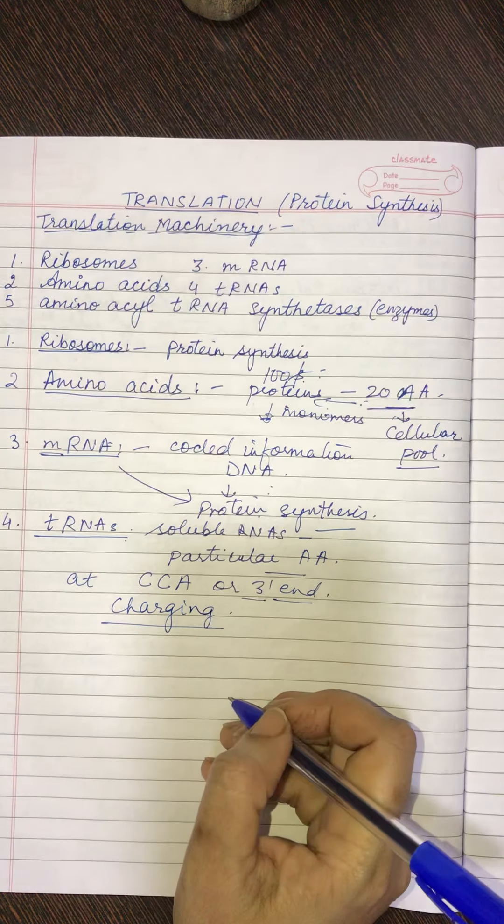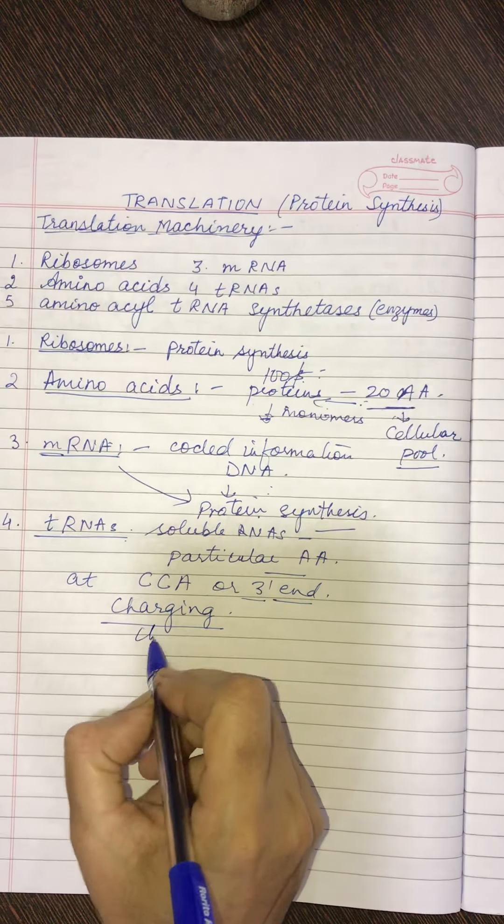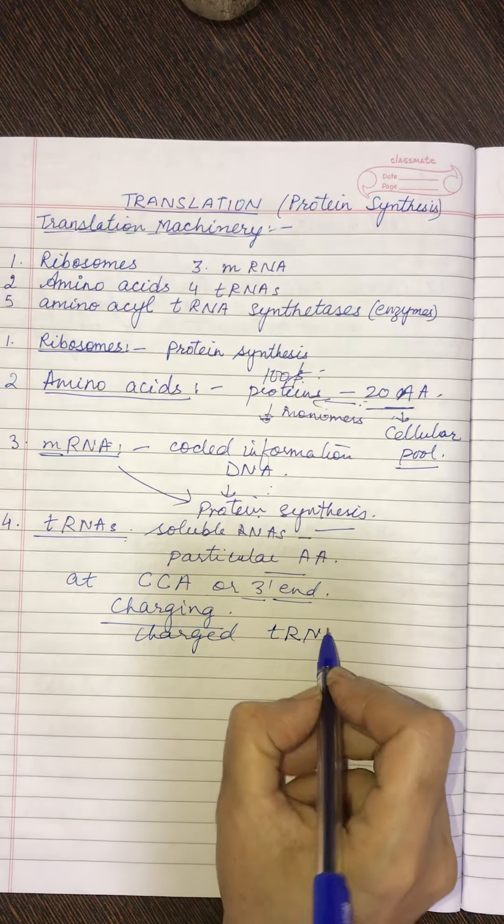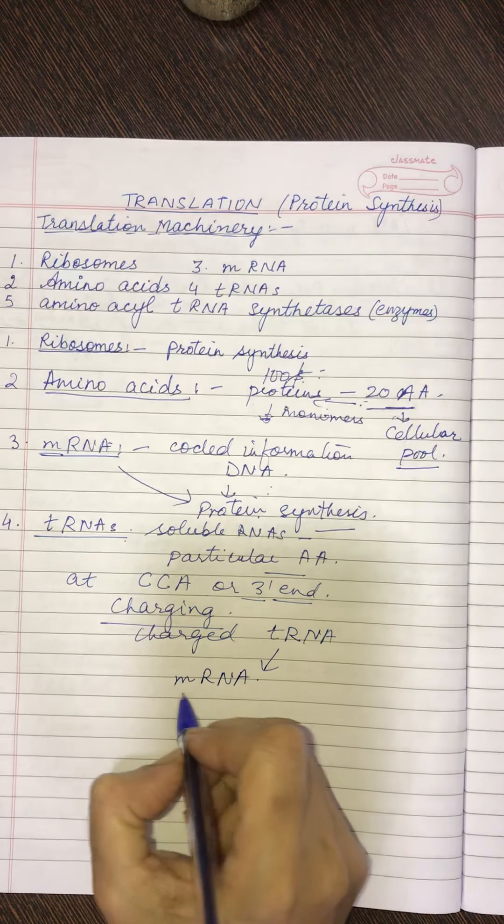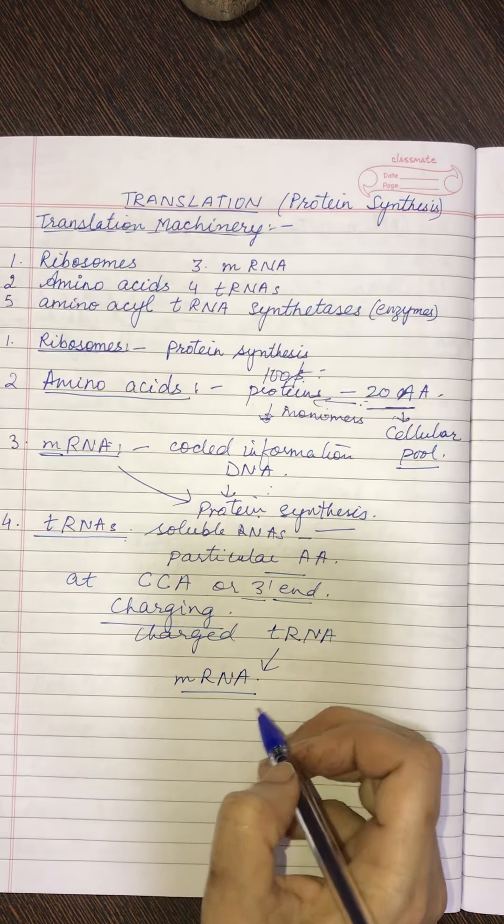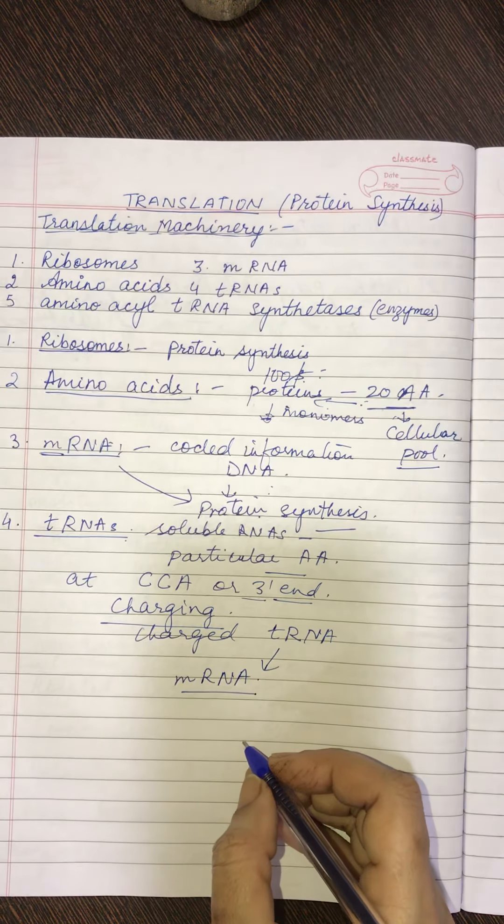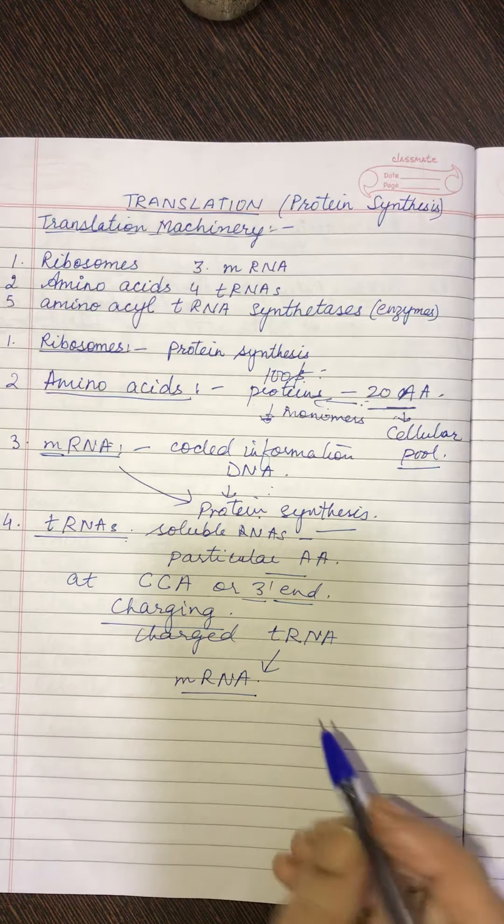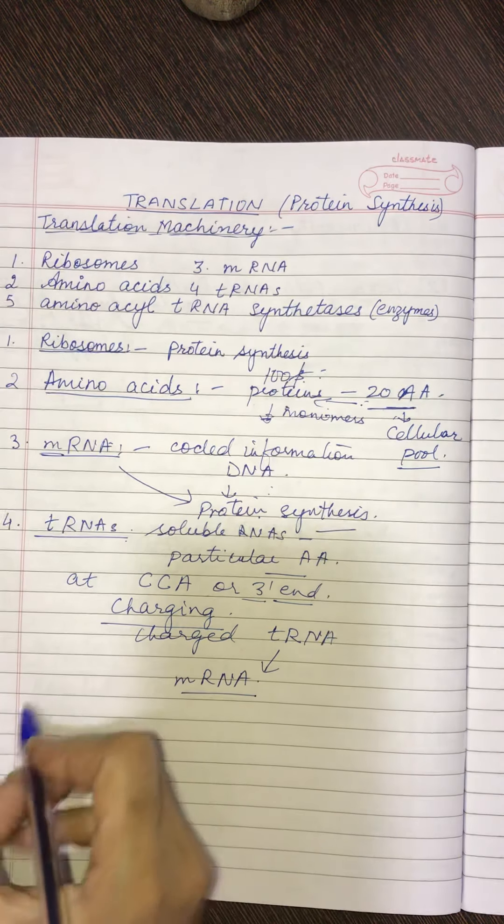Now, the charged tRNA takes the same to the mRNA. This charged tRNA brings the amino acid to the mRNA over particular codons, means it is corresponding to the anti-codons. And now, it can pick up a specific amino acid and helps in the synthesis of the polypeptide chain.